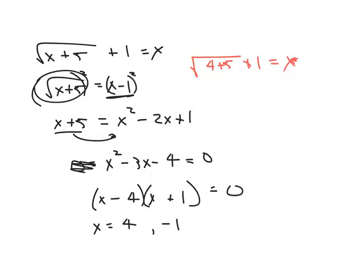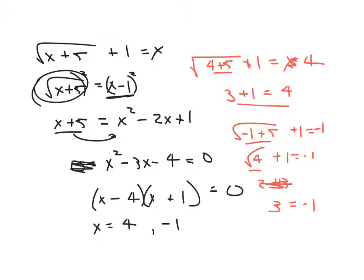That should be a 4, right? Okay, so we get 9. Square root of 9 is 3 plus 1 equals 4. That's a true statement, so that works. Let's plug negative 1 in. Negative 1 plus 5 plus 1 equals negative 1. This gives me 4. And as you can see, that's going to give me square root of 4 is 2 plus 1 is 3 equals negative 1. That does not work. So negative 1 does not work for this problem. Only 4 does. So that's why you have to check it.